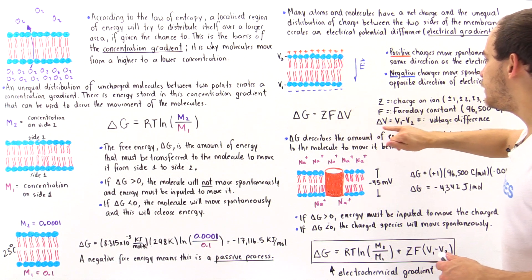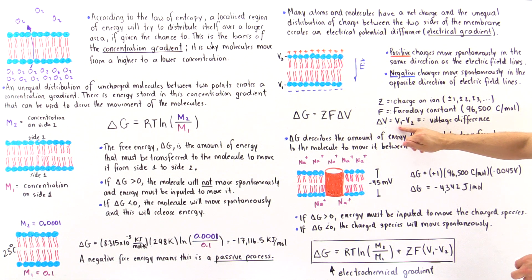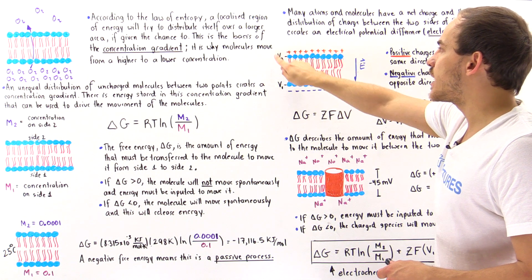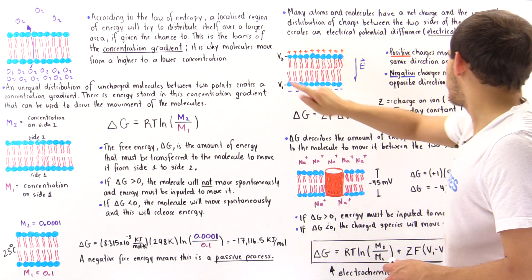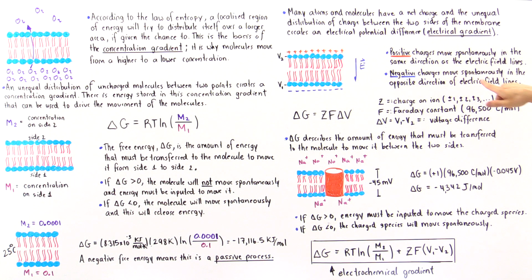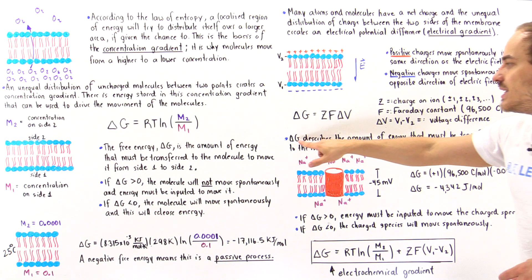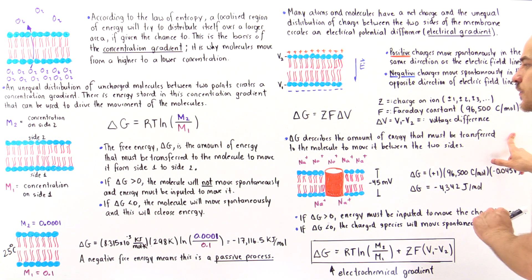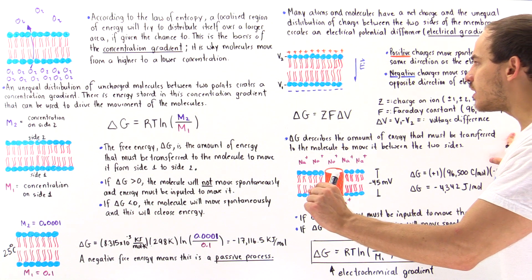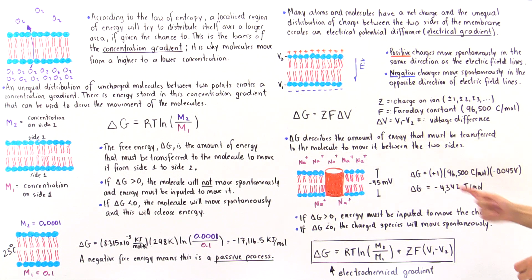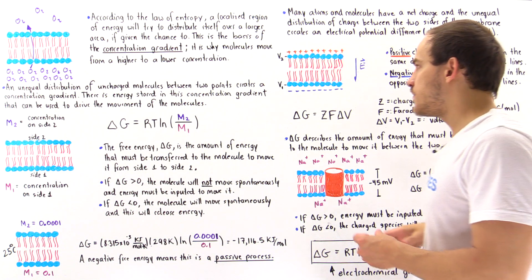Delta V is simply the difference in the voltage between one side of the membrane and the other side — the electrical potential difference, what we call the electrical gradient. So delta G describes the amount of energy that must be transferred into the molecule, or that the molecule releases into the environment, to basically move between the two sides of the membrane.